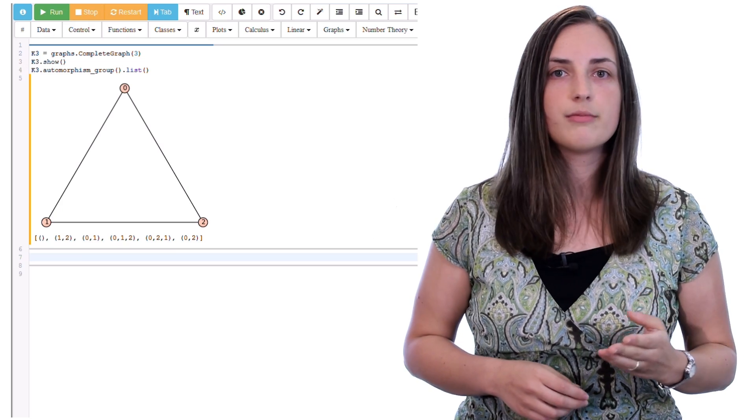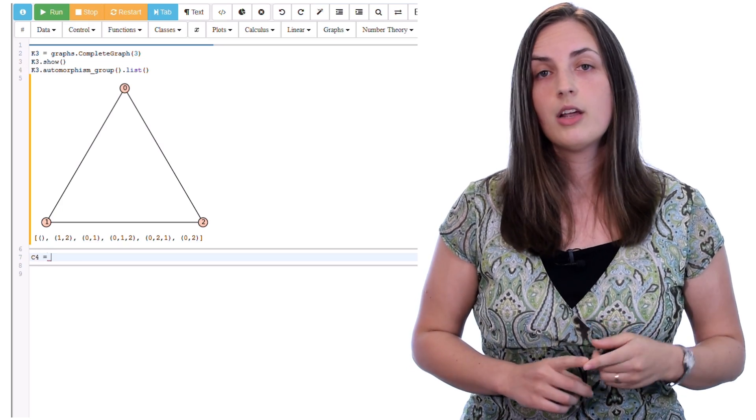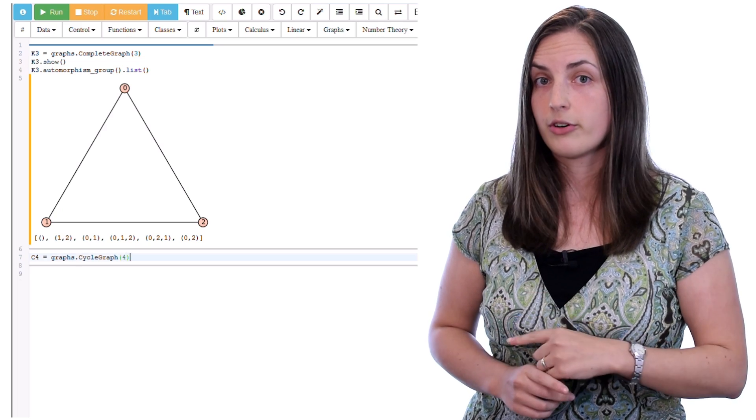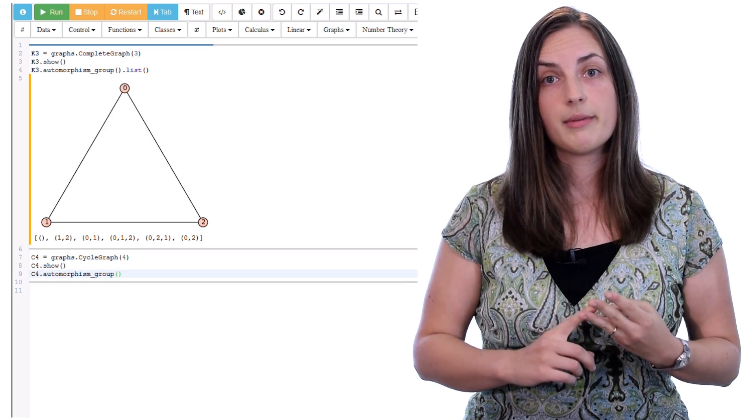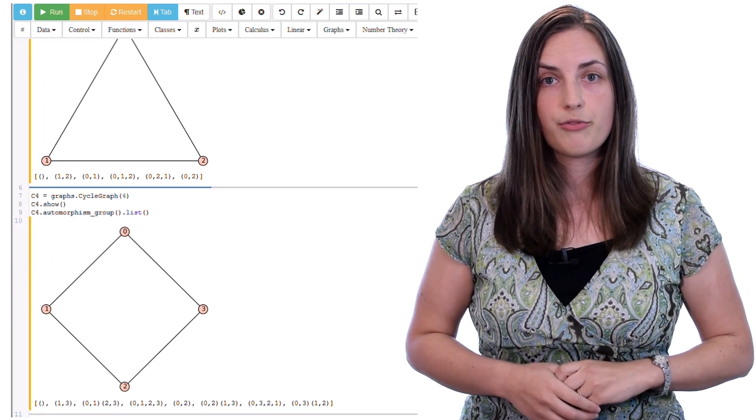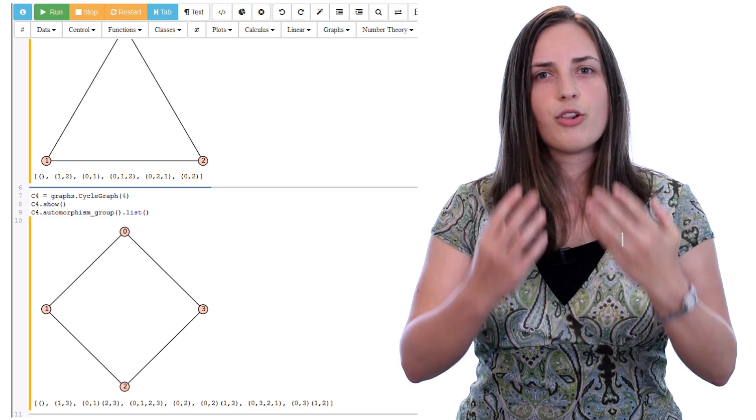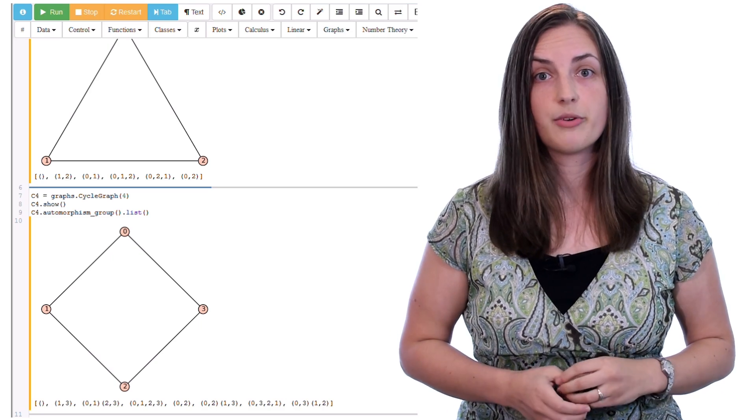Let's try another example. Let's look at the one we just saw, which was the cycle on four vertices. So we'll put in the cycle on four vertices, and again we'll ask it to show it to us, and to list all of the elements in the automorphism group, and there they are. And you can go ahead and check them for yourself. So make sure that you give yourself lots of examples to practice with, and then you could use SAGE as a test to make sure you did it right.